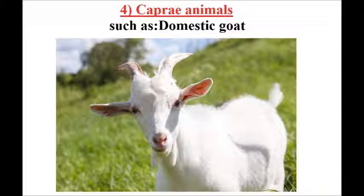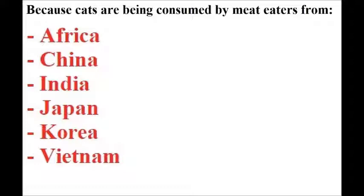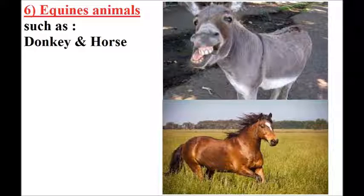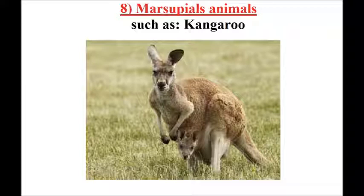5, feline animals such as domestic cat. Because cats are being consumed by meat-eaters from Africa, China, India, Japan, Korea, and Vietnam. 6, equine animals such as donkey and horse. 7, lagomorph animals such as rabbit. 8, marsupials such as kangaroo.